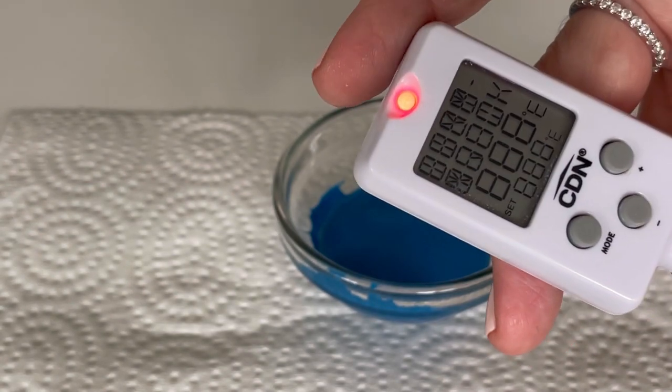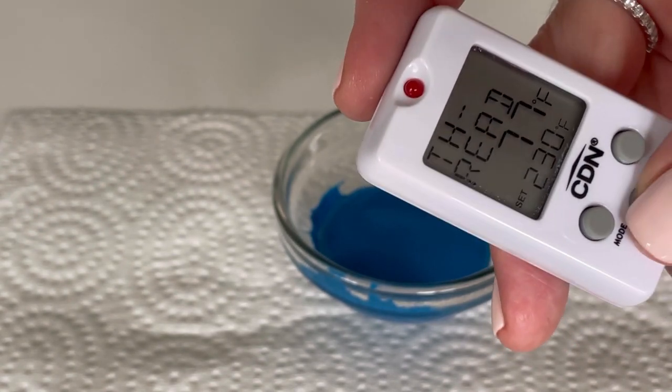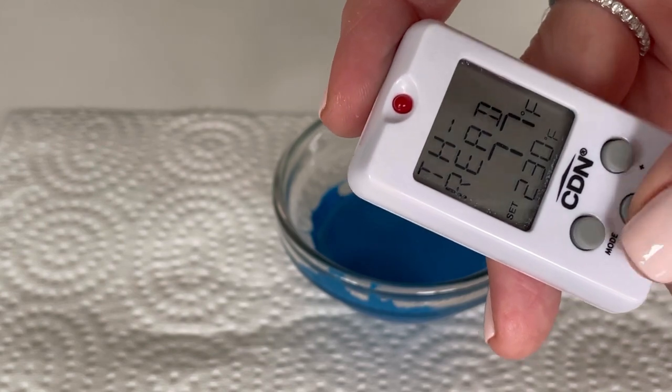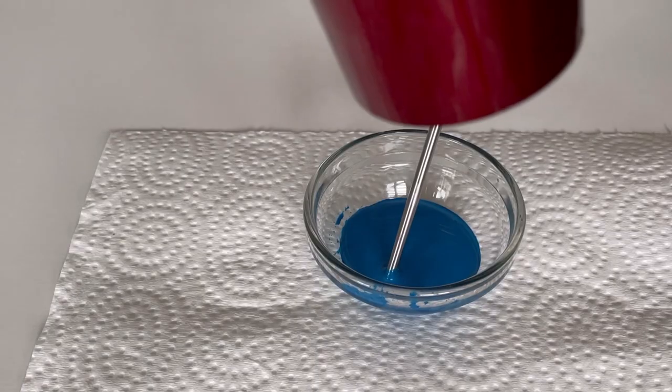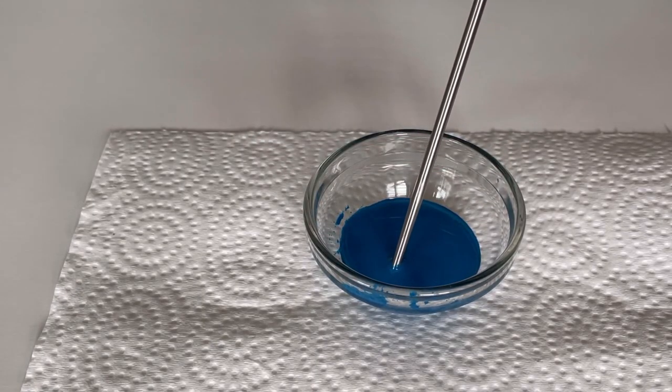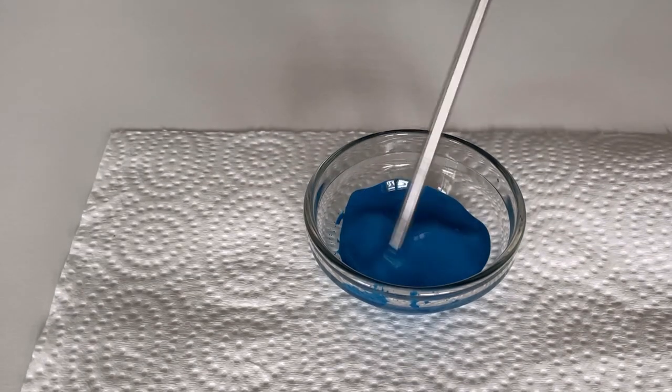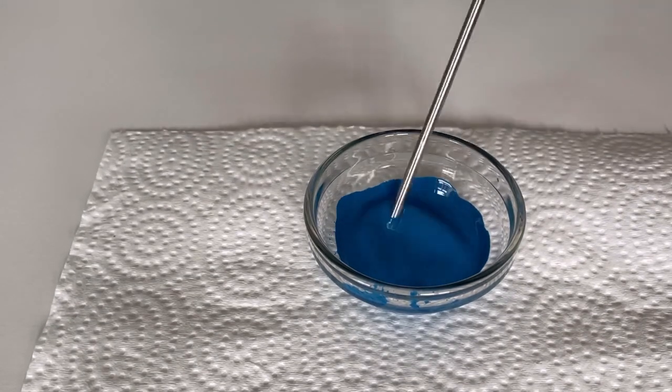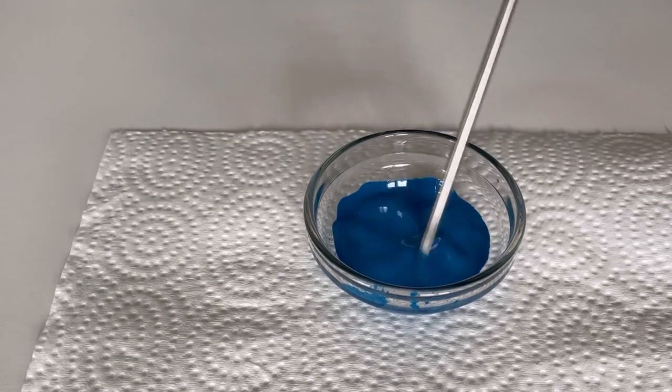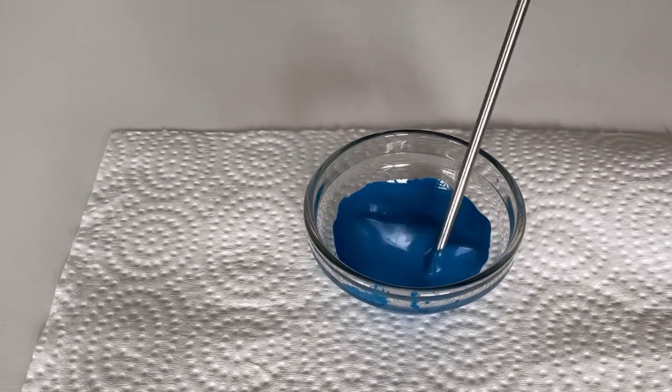I will be using this digital thermometer set to Celsius along with a hairdryer to heat up the cocoa butter. We are going to heat the cocoa butter up to 40 or 41 degrees Celsius while constantly stirring with the tip of the thermometer.